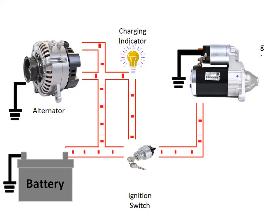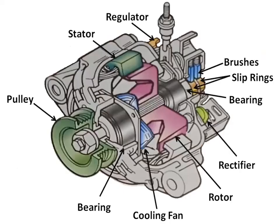Alternator operation is extremely important to provide proper operation of the electrical components and accessories and to maintain the battery in a fully charged condition. If the alternator voltage is too high, it forces excessive current flow through the electrical components, accessories, and the battery, resulting in damaged electrical components and excessive battery gassing. When the alternator voltage is too low, it does not supply enough current to the electrical accessories and the battery, which may lead to improper operation of some electrical components or accessories, and an undercharged battery.